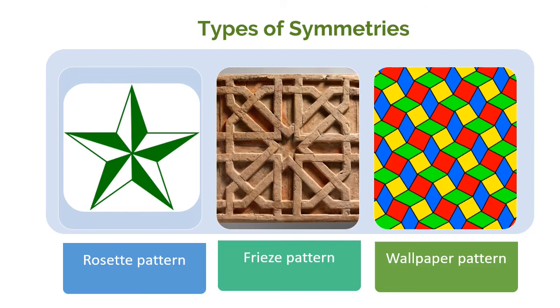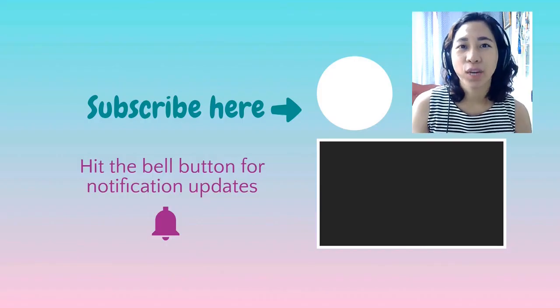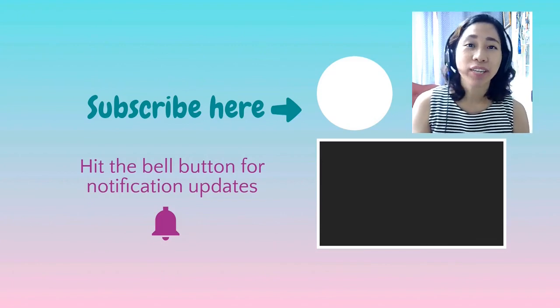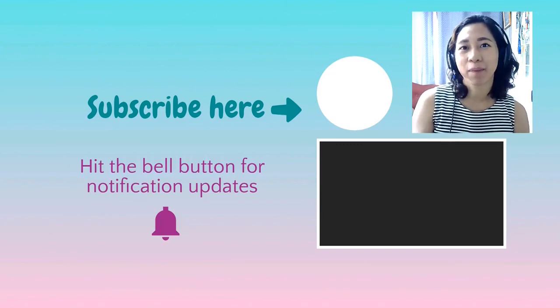These are the types of symmetries that we will discuss in this lesson. We have rosette, freeze patterns, and wallpaper. Thank you for watching my video. For more videos like this, don't forget to subscribe to my channel, and don't forget also to hit the bell button for notification updates.